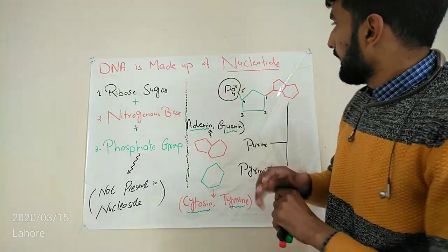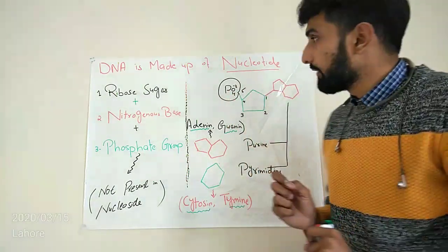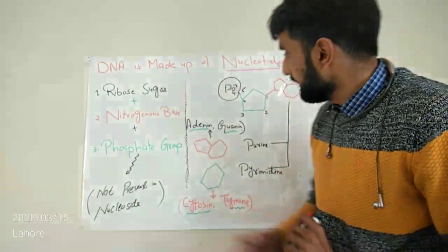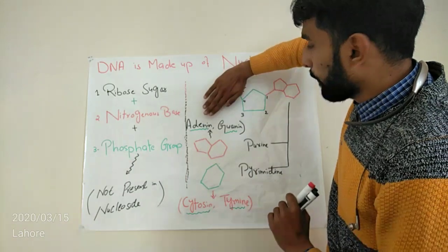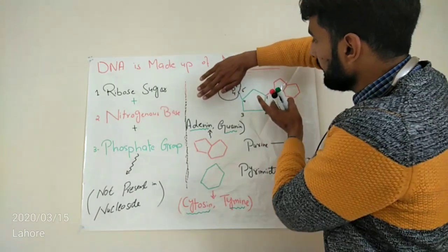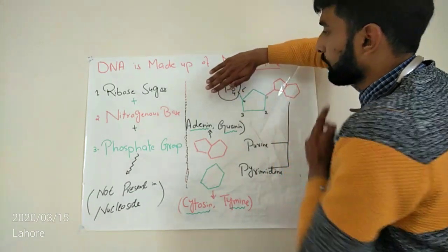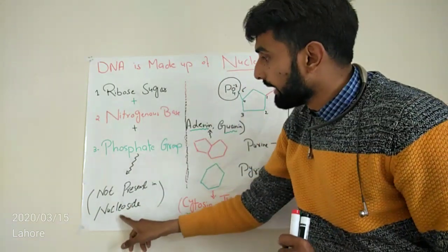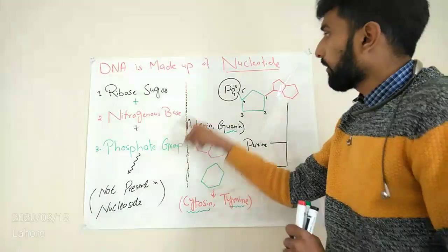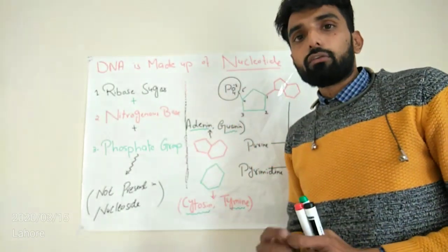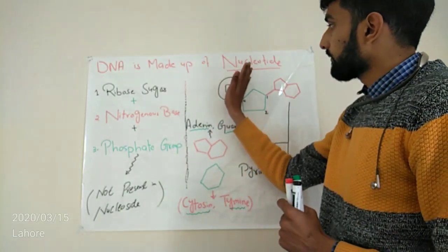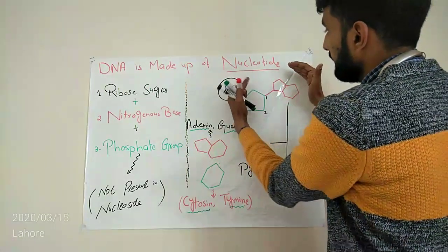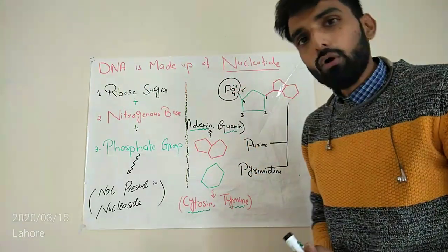And one more thing. Let's do a kind of comparison between nucleotide and nucleoside. Here you can see, if this phosphate group is not present, only ribose sugar and the nitrogenous bases are present, they will be now called as nucleoside. It will not be called as nucleotide. If phosphate group is attached, it will be called as nucleotide. If phosphate group is not attached, it will be called as nucleoside.